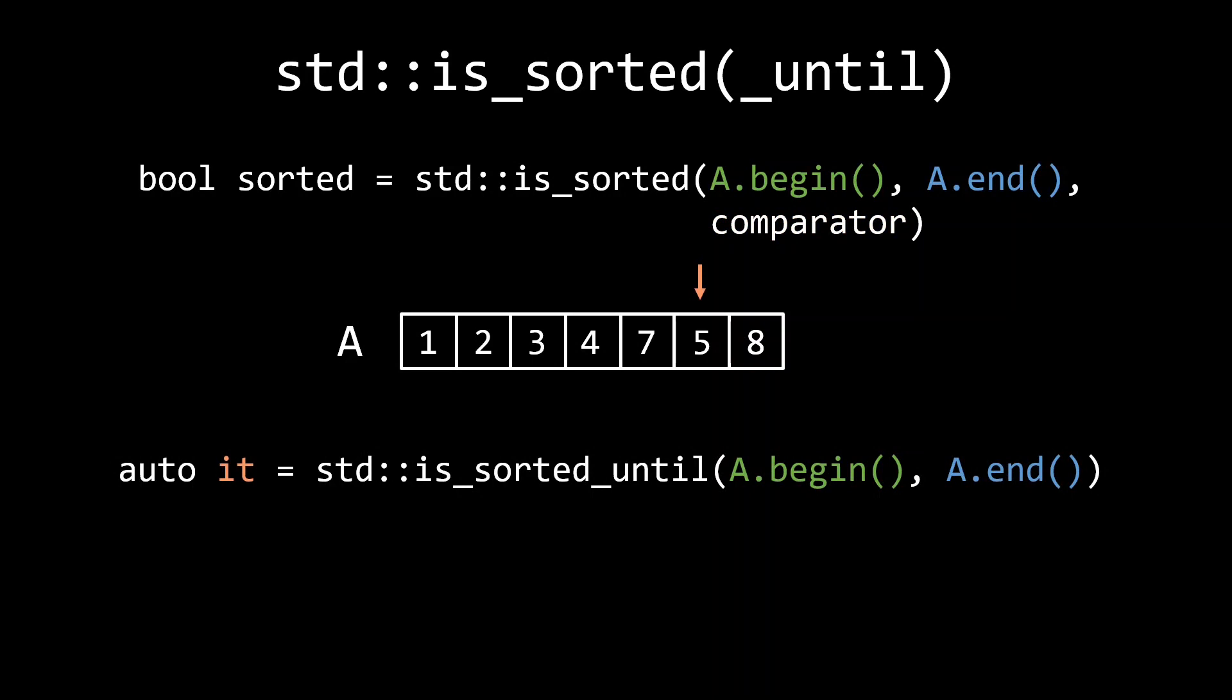Lastly, there's the isSortedUntil algorithm, which in my opinion has a somewhat misleading name. Just like isSorted, it accepts an input range, but instead of returning a boolean indicating whether the range is sorted, it will return an iterator to the first element that is not sorted.